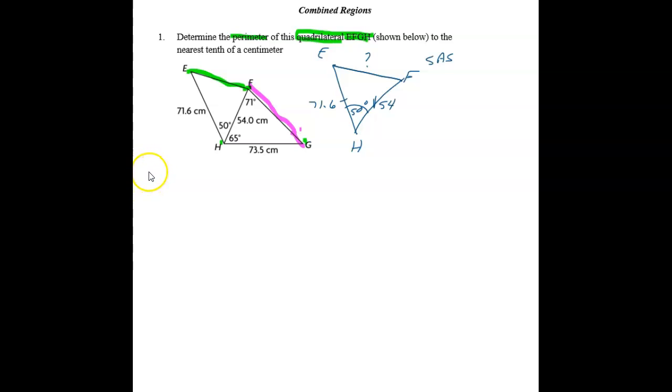So to set up law of cosine, it's the side we're trying to find. We're going to square it. So EF squared. And then you square and add the other two sides. So 71.6 squared plus 54 squared. Subtract 2 times 71.6 times 54, and cosine of the angle, and the angle has to be between the two sides that are given. So I'm going to pause it. When you come back, I'll have it solved there.